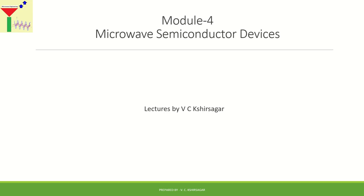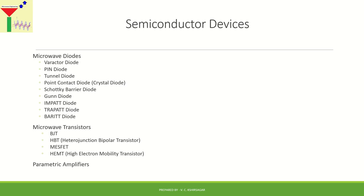The construction and working principles of all these transistor types were completed in our previous lecture. In today's lecture we will move ahead to the remaining transistor types and then start with different types of diodes. Previously we covered bipolar junction transistor, heterojunction bipolar transistor, and metal semiconductor field effect transistor — two current-controlled types (BJT and HBT) and one field effect transistor (MESFET).